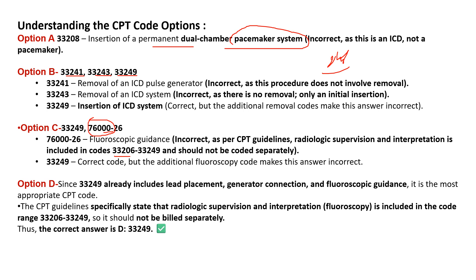There is a CPT coding guideline where code range 33206 through 33249 already includes guidance procedure — fluoroscopic guidance is already included, so you don't have to code it separately. Option D, code 33249, is correct and is the exact answer for this question. Code 33249 defines insertion of the defibrillator — insertion of ICD system.